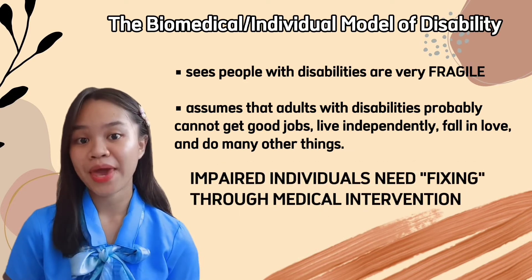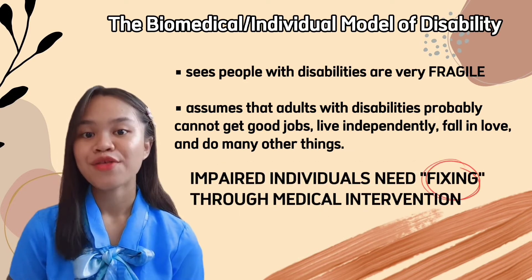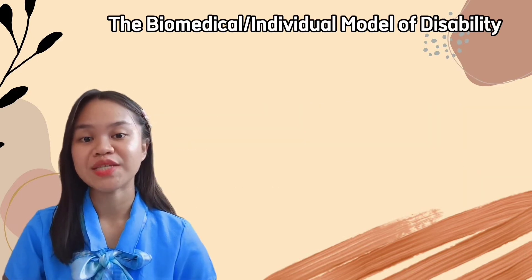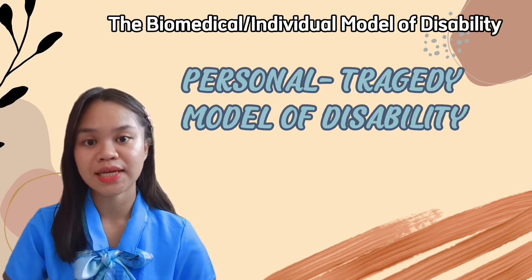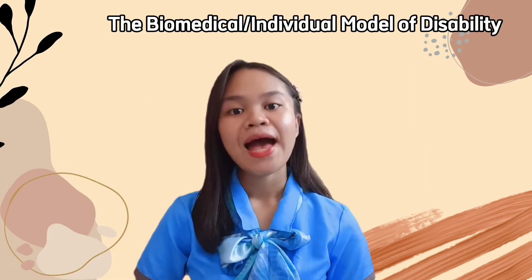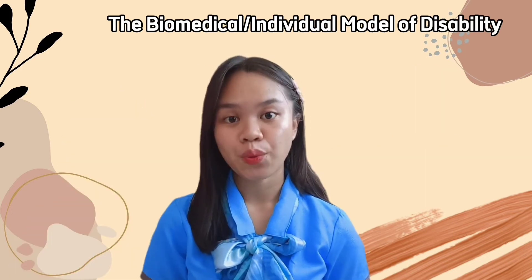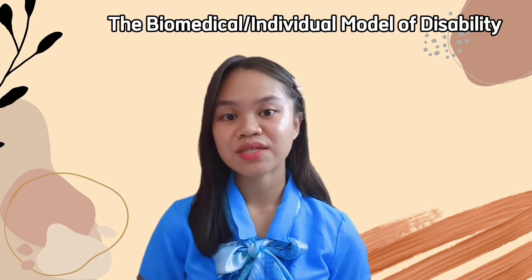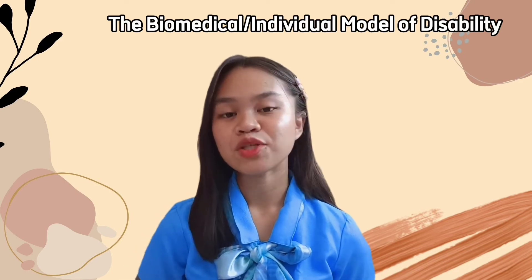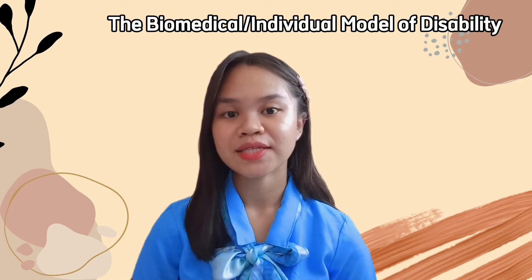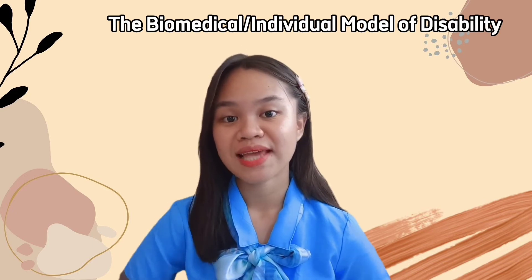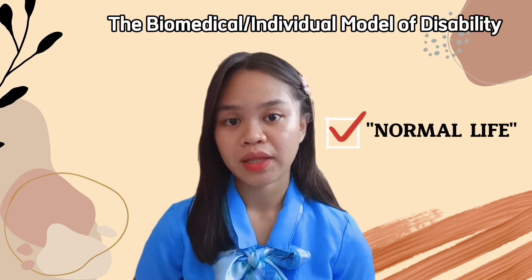In simpler words, impaired individuals need fixing through medical interventions. This model is sometimes also referred to as the personal tragedy model, where disability is considered a tragedy. According to the medical model, a compassionate or just society invests resources in healthcare and related services in an attempt to medically cure disabilities, expand functionality, improve functioning, and allow disabled people to live a more normal life.